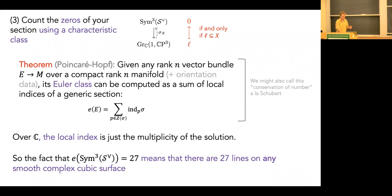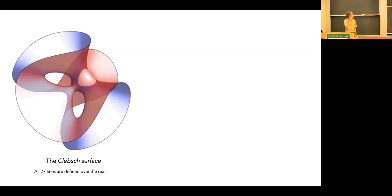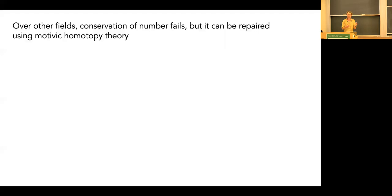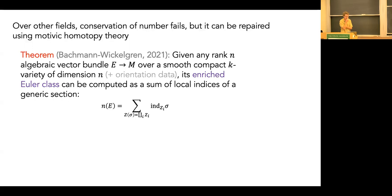The Clebsch surface is liked because all 27 of its lines, defined over the complex numbers, have equations that don't use i — they're all defined over the reals. But there are other surfaces, like the Fermat, where only three lines are defined over the reals. This means conservation of number can break over other fields. You can repair it using motivic homotopy theory: if I have a rank-n bundle over a smooth compact k-variety of dimension n with orientation data, I can compute an enriched Euler class as a sum of local indices.